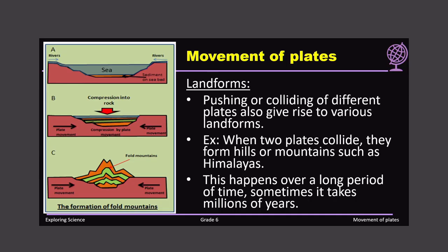Pushing or colliding of different plates also gives rise to various landforms. You can imagine the right side as the South African plate and the left part as the Indian plate. These two plates are colliding with each other, giving compression into the rock that is sediment on the seabed. The sediment is compressed such that when these two plates collide, fold mountains are raised. Some examples: when two plates collide they form hills or mountains such as the Himalayas. This procedure is very slow — it takes millions of years, so we don't get to see this happen every day.